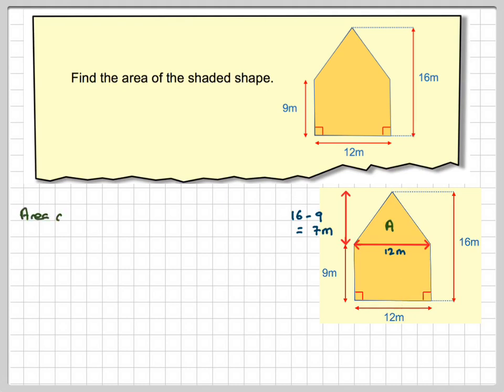So the area of triangle A is going to be half base times the height, so it's going to be half of 12 times 7, that gives me 42 meters squared.